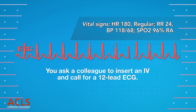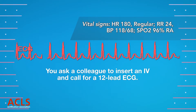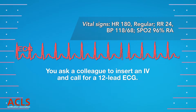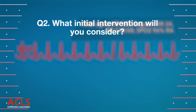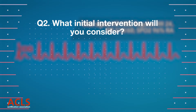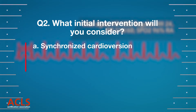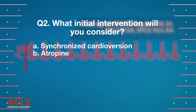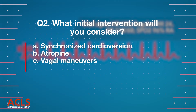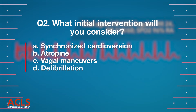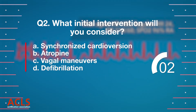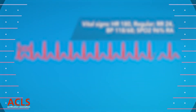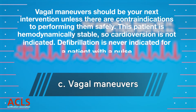You ask a colleague to insert an IV and call for a 12-lead ECG. What other intervention might you try? Vagal maneuvers.